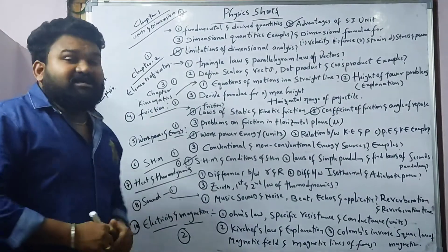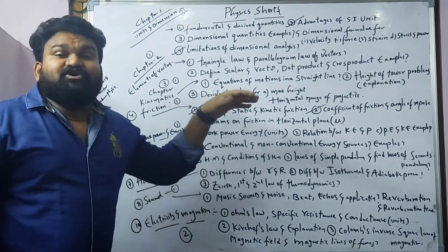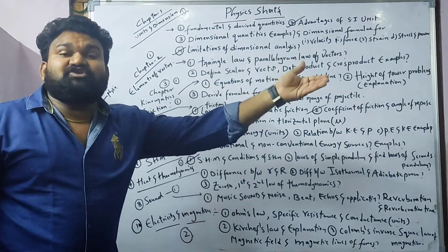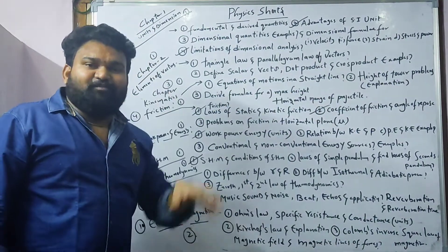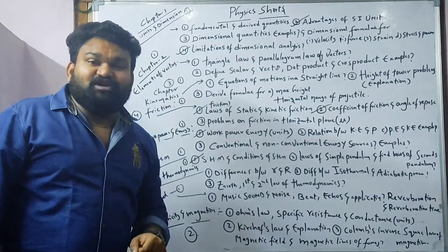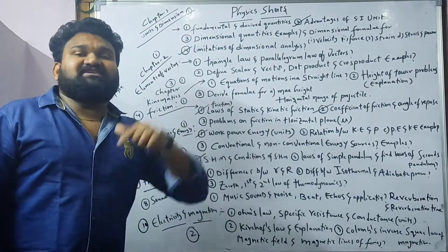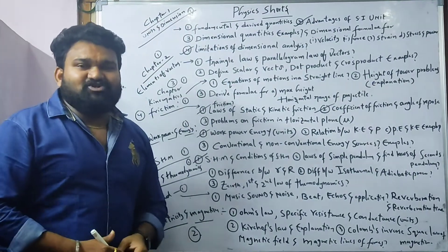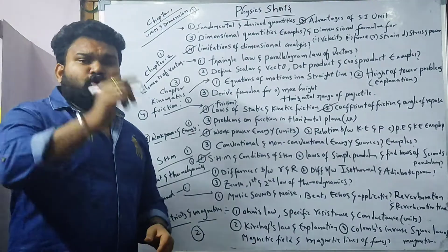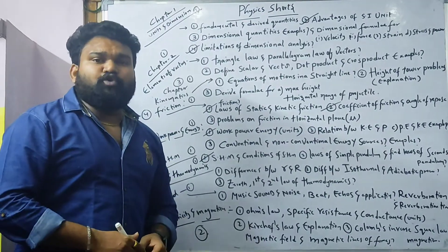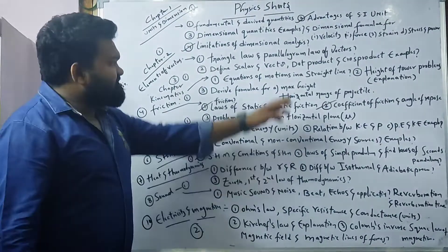Let's go to the third chapter — kinematics. Equations of motion in a straight line: for a body with some mass, some acceleration, uniform acceleration. The equations are: v = u + at, s = ut + ½at², v² - u² = 2as, and sₙ = u + (a/2)(2n - 1). These are worth 3 marks.